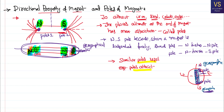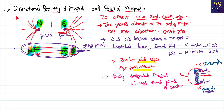That is why any freely suspended magnet always shows north and south poles, as there are two poles — north and south — of the earth. This is how it is identified. A magnet always has two poles — north and south. As the magnet always has two poles, it is also called a dipole.